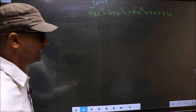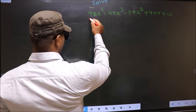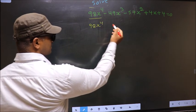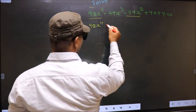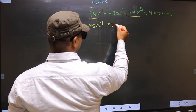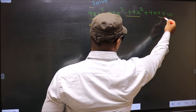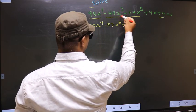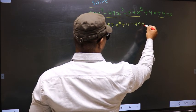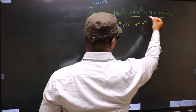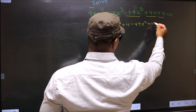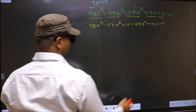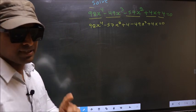First I write the x⁴ term, next the x² term, next the constant plus 4, next the x³ term minus 49x³, and next the x term 4x equal to 0. This is step 1.